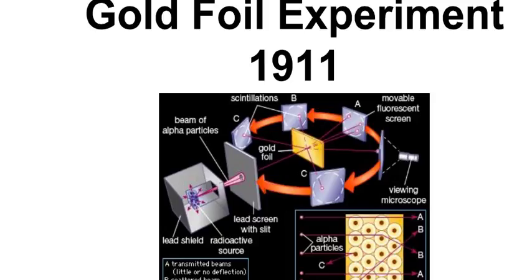This indicated that atoms have something in them called a nucleus. Rutherford and his partners figured out the nucleus is positively charged because the alpha particles are positively charged too.